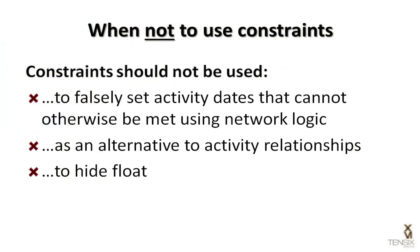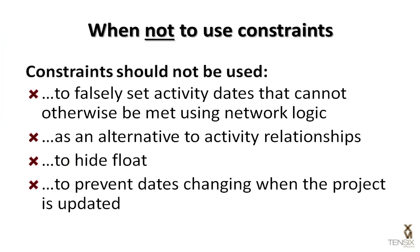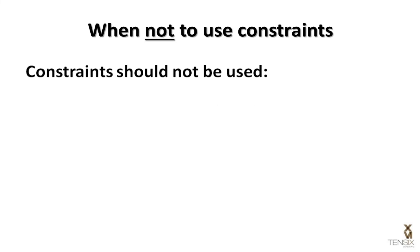Constraints should not be used to prevent date changes when the project is updated. Using hard constraints to lock down activities and prevent them from moving when the project is progressed undermines the schedule's data integrity, not to mention the very purpose for building the schedule in the first place. Effective critical path analysis of schedules built this way is virtually impossible, and the schedule will have little value to the project management team.